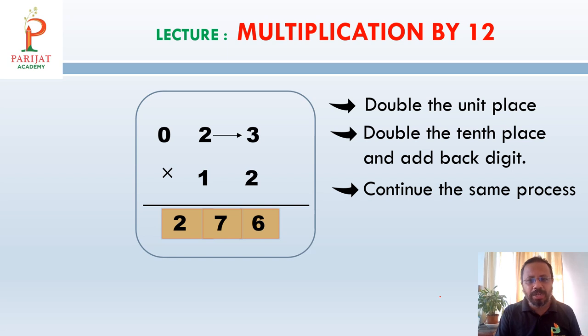We will repeat it again. Double the unit place which is 6. Then double the tenth place and add back digit which is 4 plus 3 is 7 and continue the same process means 0 plus 2 is 2. Always remember we have to prefix 0 for carry-over purpose. Here we don't have any carry-over. So we are not adding anything. We are just adding 0 to the back digit 2. So 0 plus 2 is 2. So our final answer will be 276.